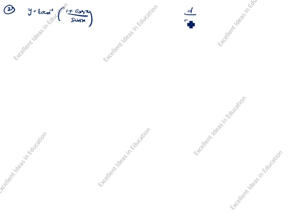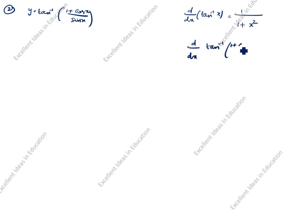This is the first method. Now we will see the second method. Y is equal to tan inverse of (1 plus cos x) divided by sin x. The differentiation formula for tan inverse of x is 1 divided by (1 plus x square), so here it becomes 1 divided by 1 plus [(1 plus cos x)/sin x] squared.